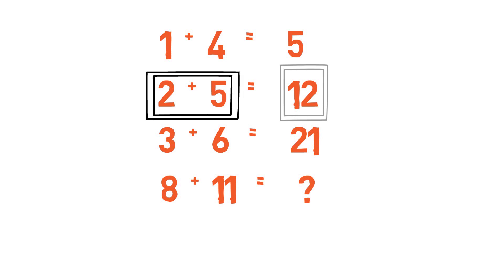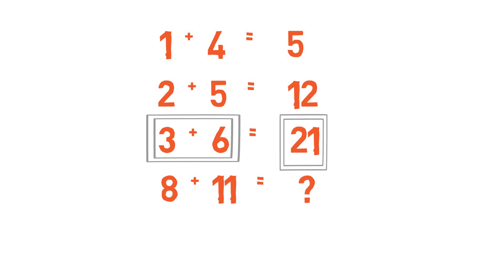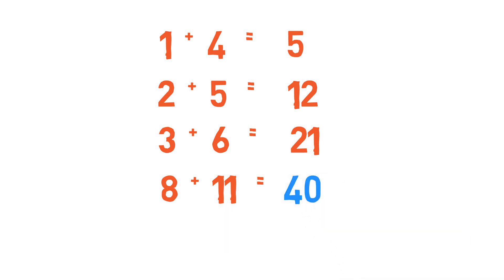Let's try this logic for the next line. We have 12 plus 3 plus 6 and that gives us 21. And by this logic, the next result should be 21 plus 8 plus 11, which is 40.